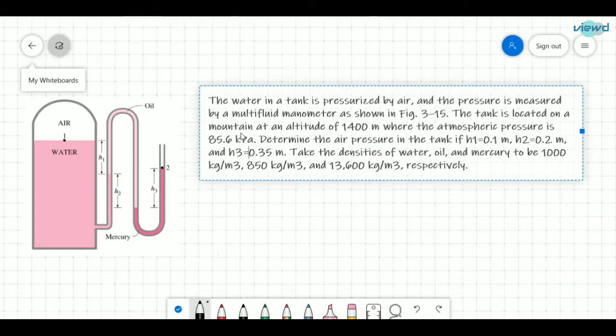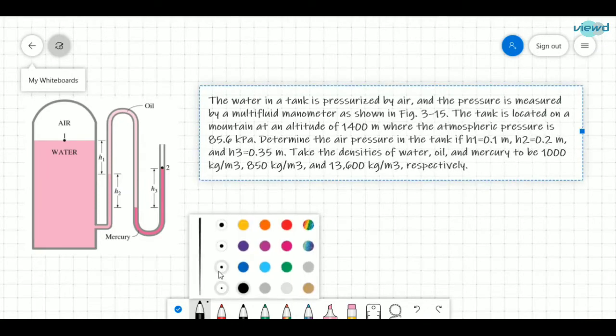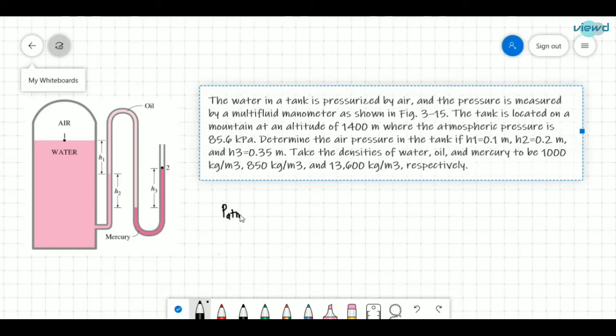The tank is located on a mountain at an altitude of 1400 meters where the atmospheric pressure is 85.6 kilopascals. Atmospheric pressure is given as 85.6 kilopascals. Determine the air pressure in the tank.